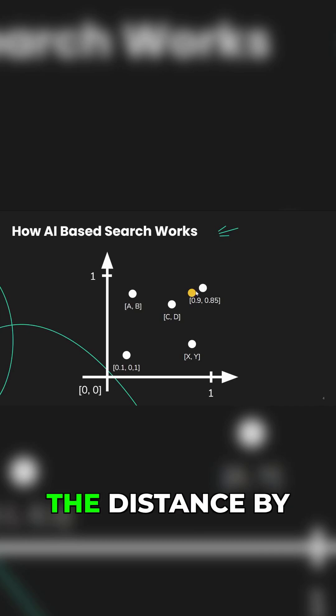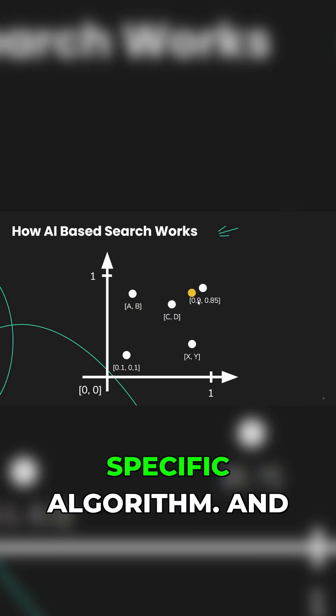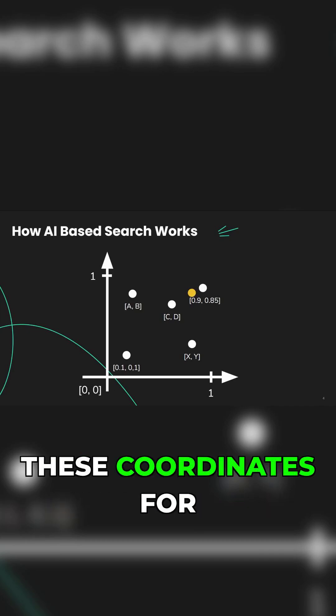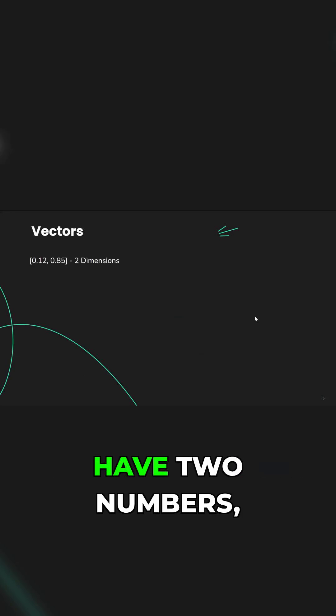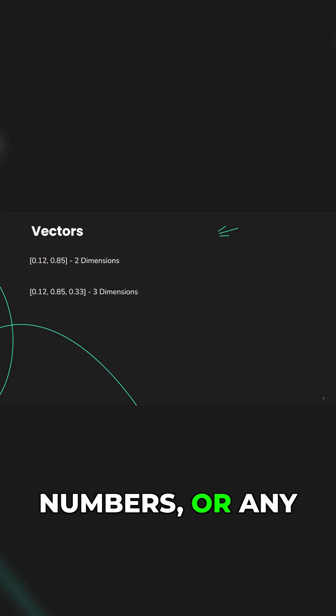We calculate the distance by a specific algorithm. These coordinates for those points - A, B, C, D, X, Y: 0.9, 0.85 - those are vectors. Vectors can have two numbers, three numbers, nine numbers, or any amount of numbers.